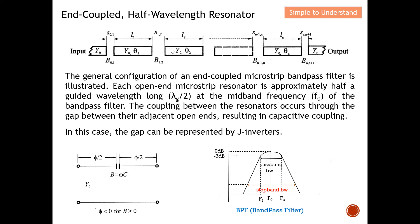Let's quickly understand how we can design this N-coupled microstrip line. This diagram shows the N-coupled microstrip bandpass filter. This is one microstrip line and this is another — you can see there is a gap between the two microstrip lines, and the waveform couples from one microstrip line to another, hence this is what we know as N-coupled.